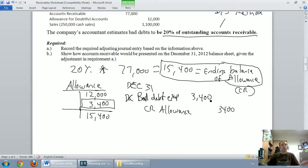So, we've got a good journal entry again. Debit bad debt expense, credit the allowance, $3,400.